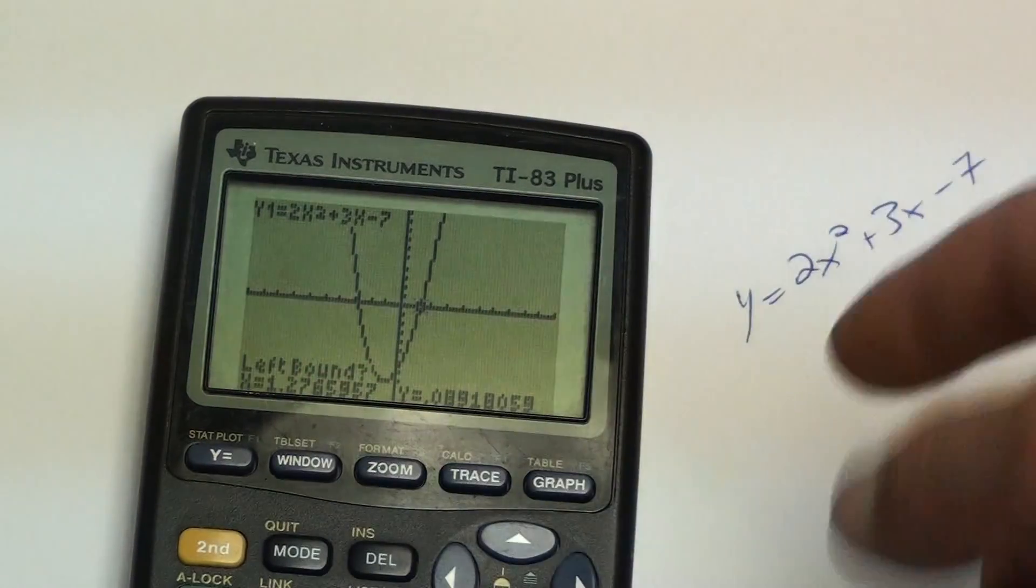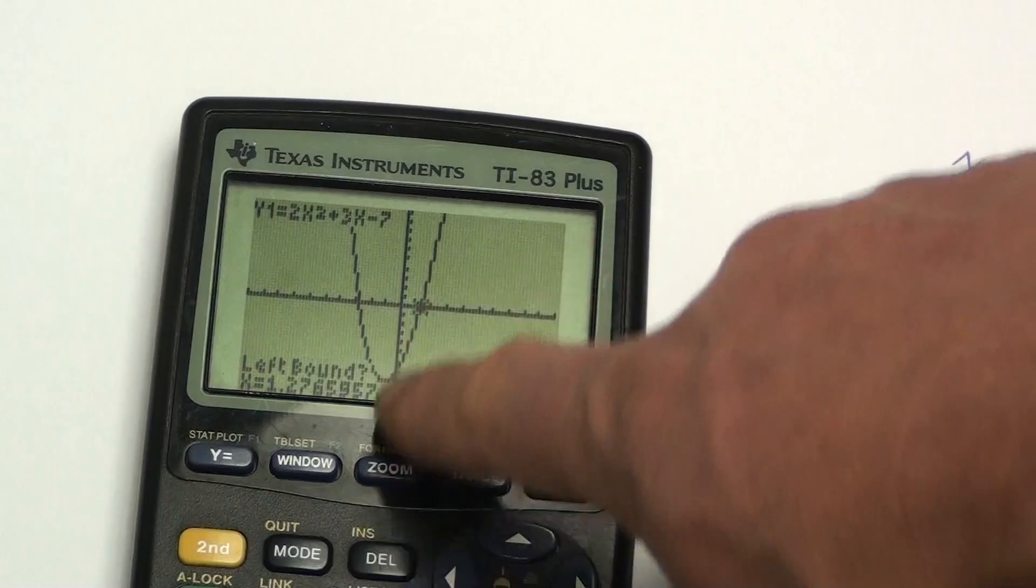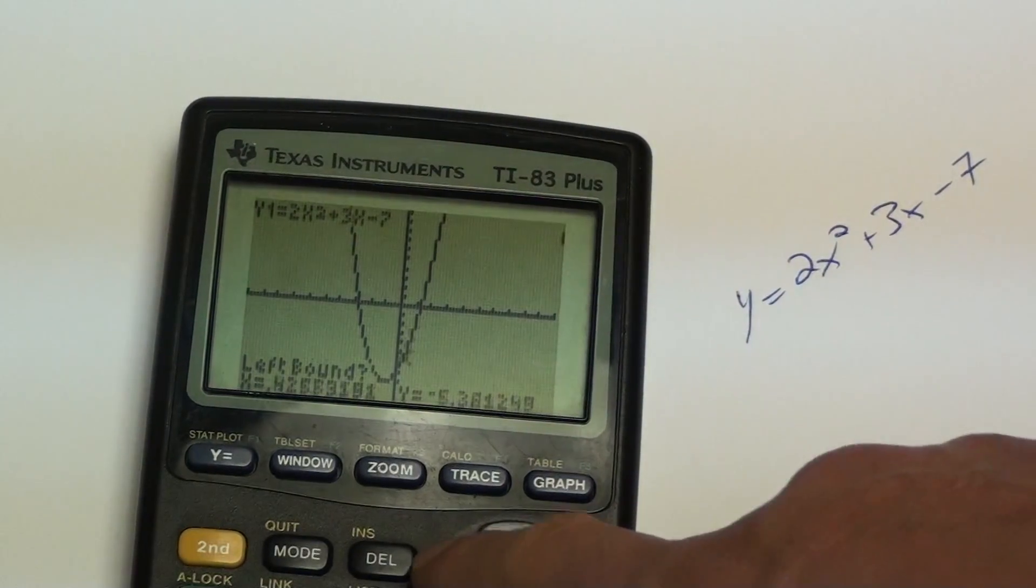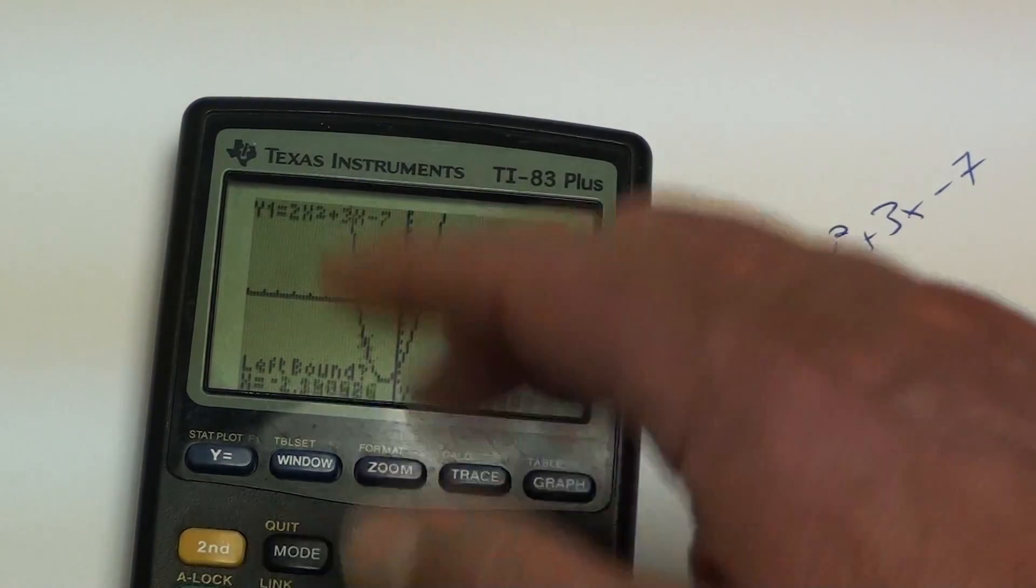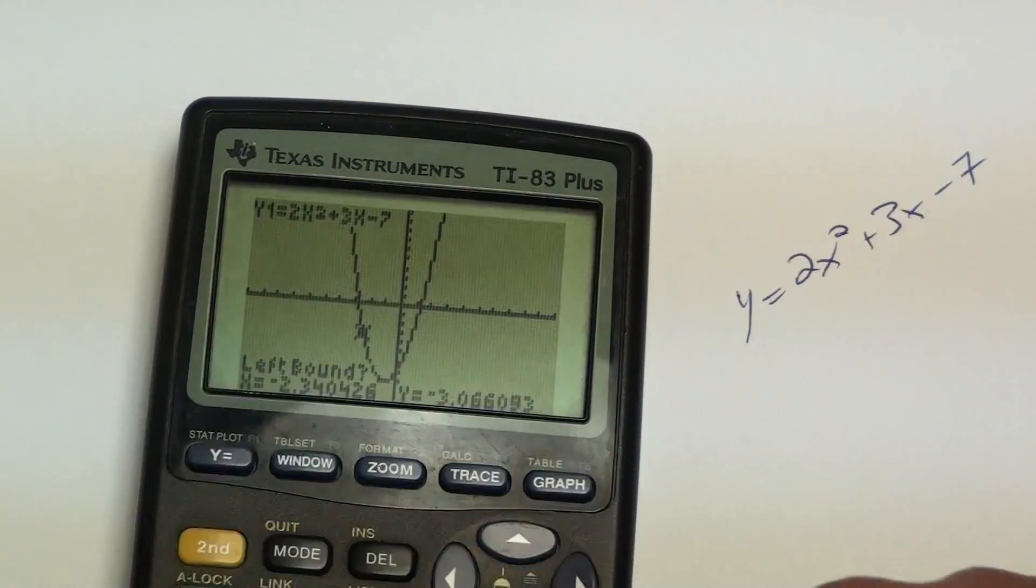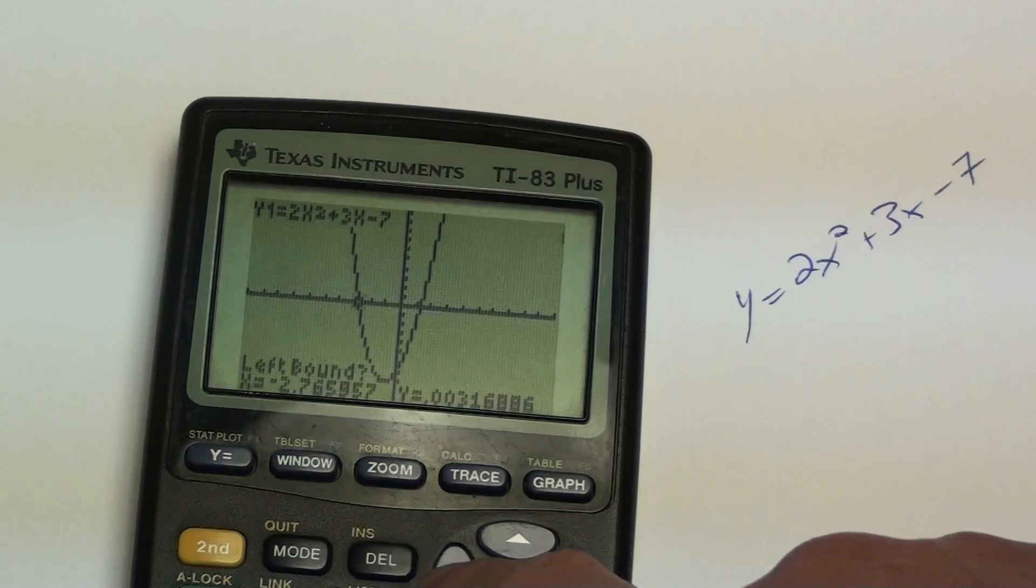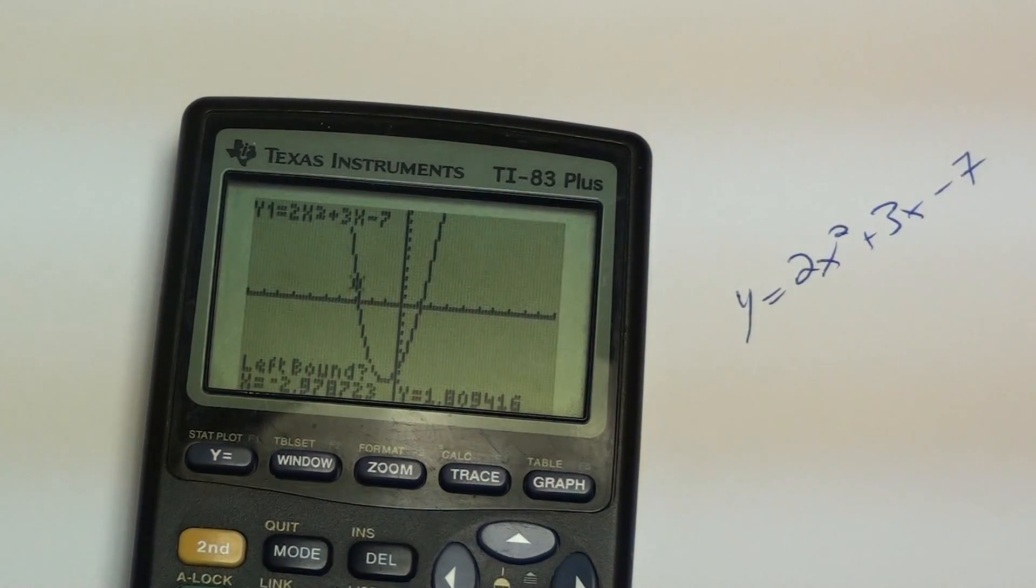And it's asking left bound. So I need to move my little star across using just only the left and right arrows. Move it all the way across until I'm to the left of the x-intercept. So in this case, that means I need to go on the other side. Hit enter.